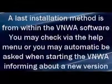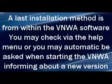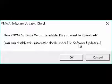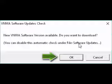A last installation method is from within the VNWA software. You may check via the Help menu, or you may automatically be asked when starting the VNWA application, which informs you about a new version. When a previous VNWA version is started, the following prompt appears. If you want to download, click OK.